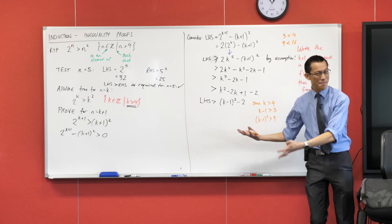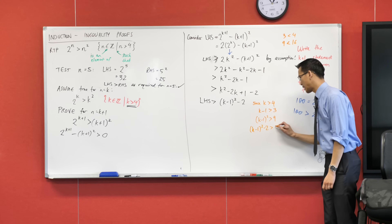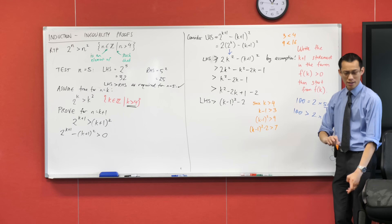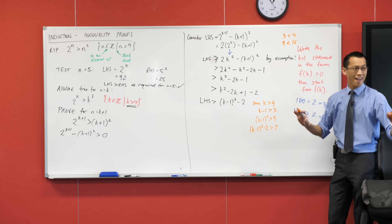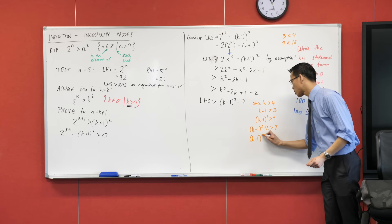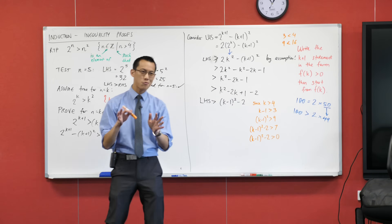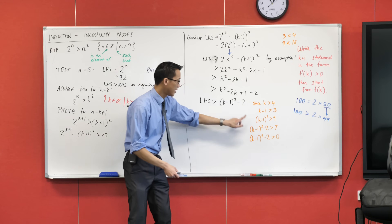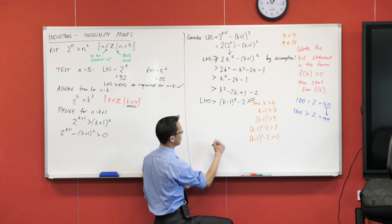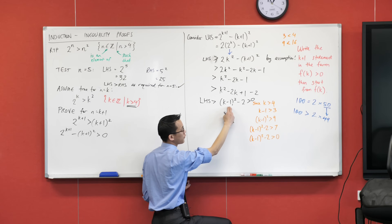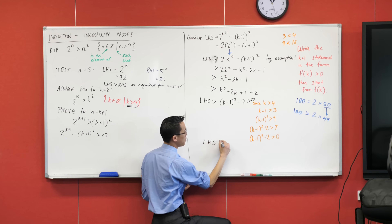I don't just have k minus 1 squared all by itself; I have k minus 1 squared minus 2. So I'm just going to subtract 2 from both sides — that gives me a 7 on the right-hand side. But now look: this is some number, it's greater than 7. If I ask you all to think of a number that's greater than 7, all of those numbers have to be bigger than 0. If they were bigger than 7, they have to be bigger than 0 — they have to be positive. Do you see what we've just established? That guy there is greater than 0. If this is bigger than this, and this is bigger than this, it's like a big fish eating a smaller fish, which eats an even smaller fish. This guy clearly is bigger than that one down the end, so the left-hand side must be greater than 0 itself.